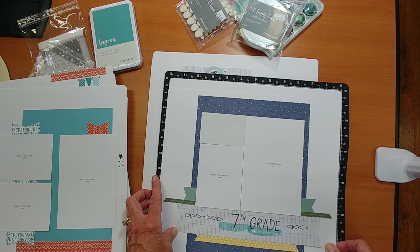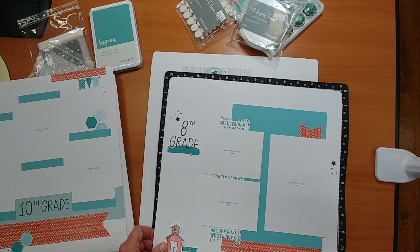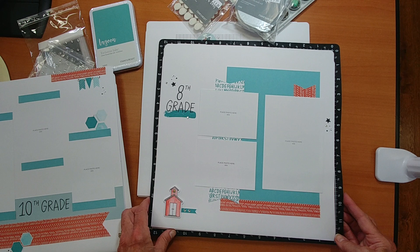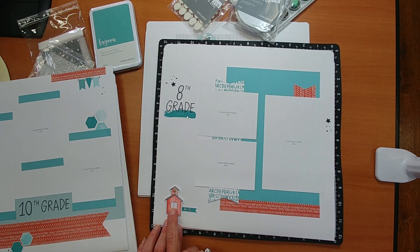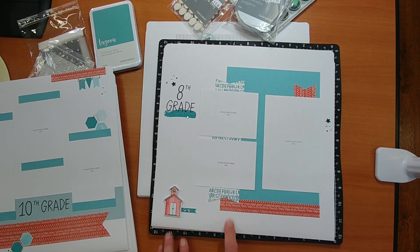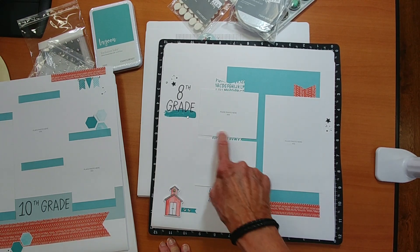There's 7th grade. 8th grade. Here's the school. I popped them up. That's where I use these little pop dots. There's your clear bling that you get also in the kit. This is stamped with the border background.